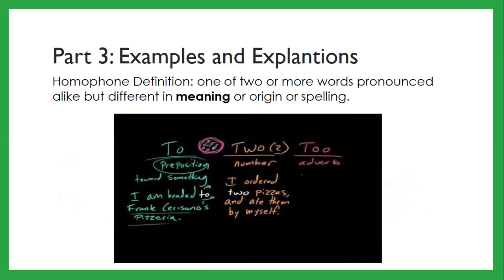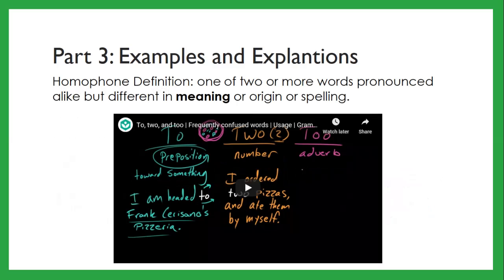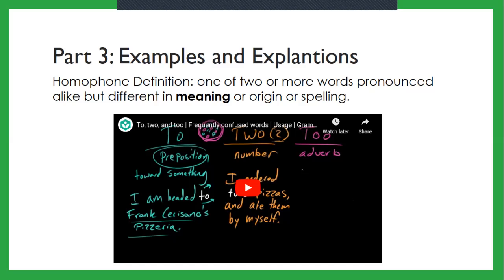Okay, so the homophone definition is one of two or more words pronounced alike, but different in meaning or origin or spelling. So we're going to watch a video from the Khan Academy about the to, two, and too frequently confused words.